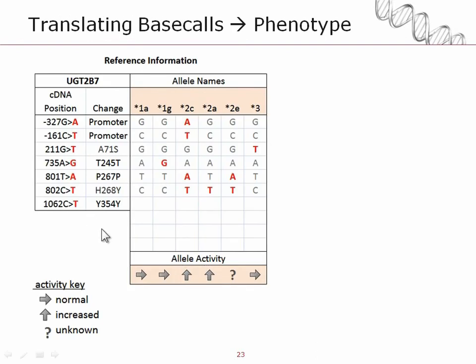What is allele translation? It helps to start with the reference information that's available to DMET console. I picked one particular gene, UGT2B7, which has seven markers. In addition to that we have defined star allele names. A star allele name is actually a pattern of genotypes across the markers that are used to do naming.